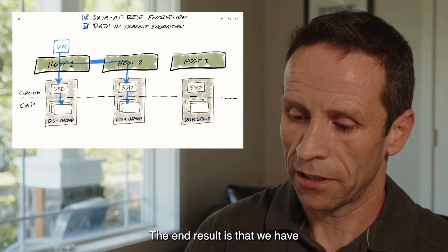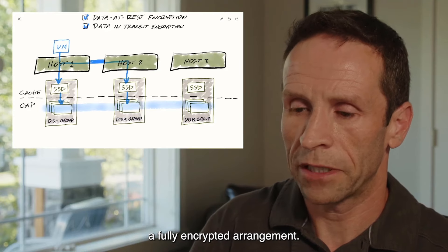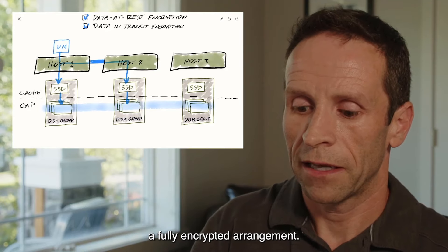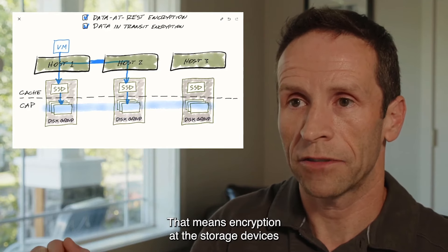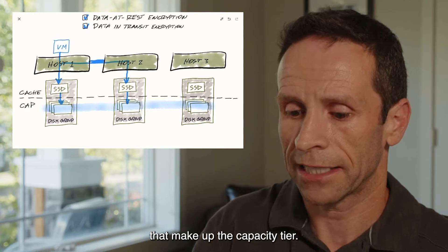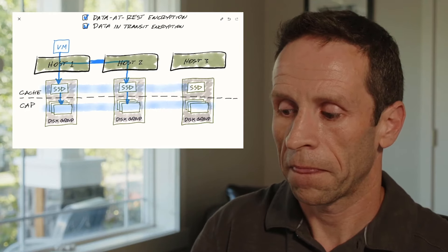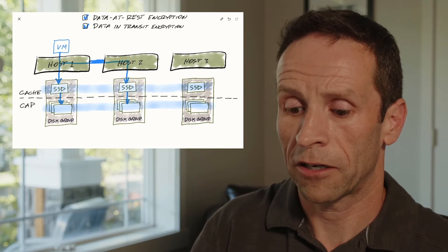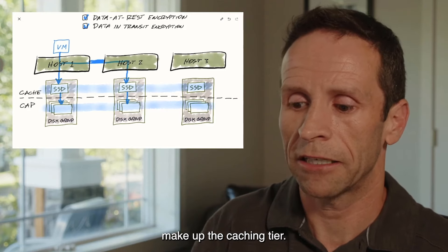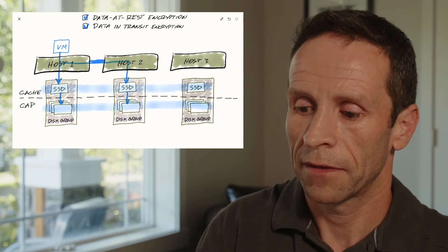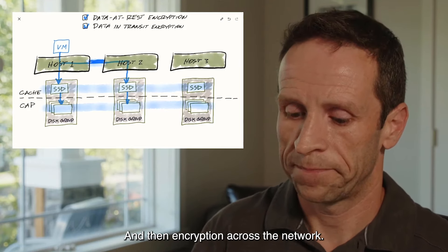The end result is that we have a fully encrypted arrangement — encryption at the storage devices that make up the capacity tier, encryption on the storage devices that make up the caching tier, and encryption across the network.